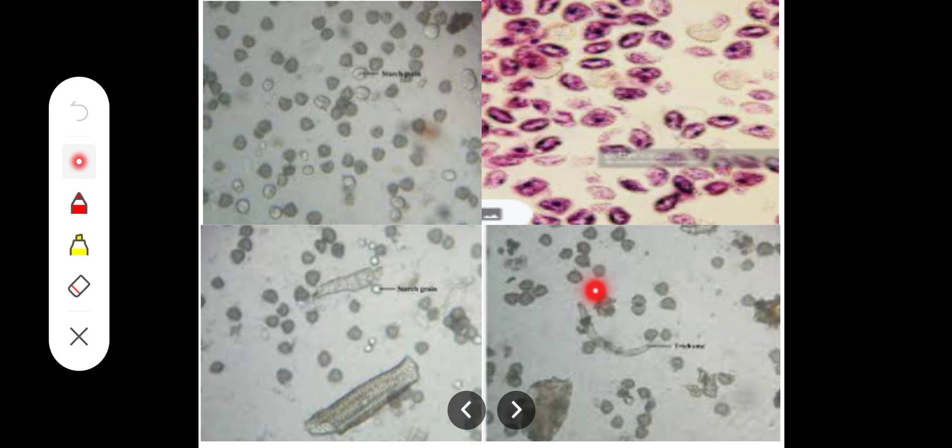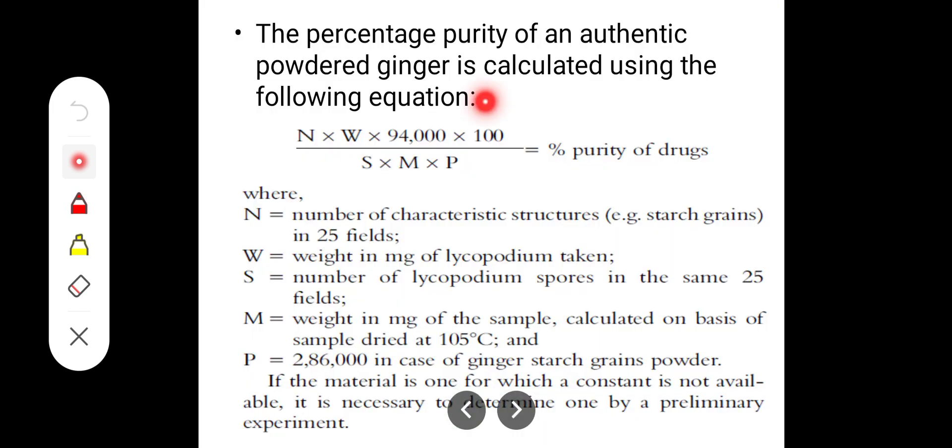Lycopodium will look similar in shape and size and dark in color. All will look the same size. The particular starch grains you can find out. We can count those in 25 fields. Remember, in 25 fields we count the number so that we can put it into this formula and get the percentage purity for the particular drug.